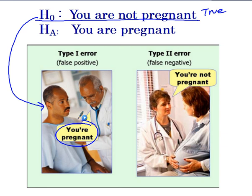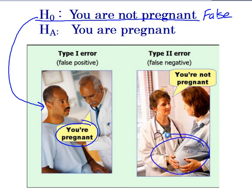A type 2 error comes into play whenever we say that the null is false. So 'you are not pregnant' — well, if we look at this lady here, she's rocking a killer baby bump. We know that she's probably pregnant, most likely. Look how she's holding the thing — she's pregnant. So this is a false null. But if we look at the doctor, the doctor is failing to reject that false null. She's telling the lady, 'you're not pregnant.' So that is a type 2 error.